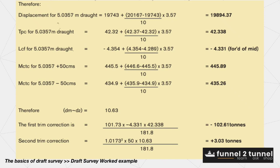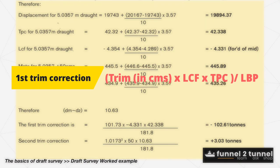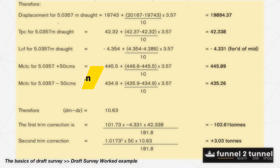Once you have the displacement of the vessel in salt water, you need to apply a few corrections to arrive at the net displacement. The first correction is called the first trim correction or the layer correction. It is obtained by multiplying trim in centimeters by LCF and TPC, and dividing the whole thing by the LBP. LCF is measured in meters from amidships. If LCF and trim are in the same direction, the correction is positive; when they are in opposite directions, the correction is negative.